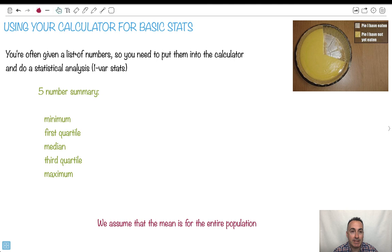So often you're given a list of numbers and the whole idea is to put them into your calculator, your GDC, your graphing display calculator, and do some sort of statistical analysis. Sometimes that's what's known as the five-number summary. Your calculator will tell you these things: the minimum, often called Xmin, first quartile Q1, median which is also Q2, Q3, and the maximum Xmax.